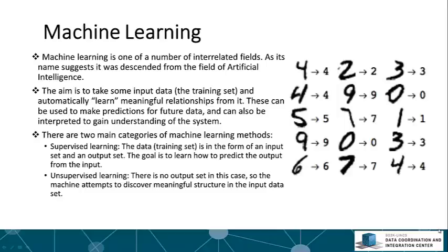Broadly speaking, there are two main categories of machine learning methods. First there are supervised learning methods, and this is when the data that we receive is of the form of an input and an output set.